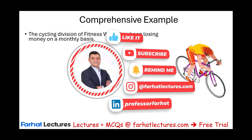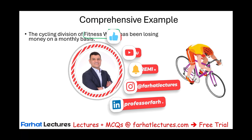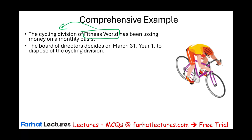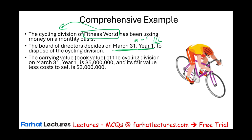Let's look at the cycling division of Fitness World. Fitness World is the main company with many divisions, one of which is the cycling division, and this division has been losing money. The board of directors decided on March 31st of year one to dispose of the cycling division. The carrying value of the cycling division when we decided to dispose of it is $5 million. The fair value less cost to sell is $3 million. Do we have an impairment loss? Yes — we have an impairment loss of $2 million.